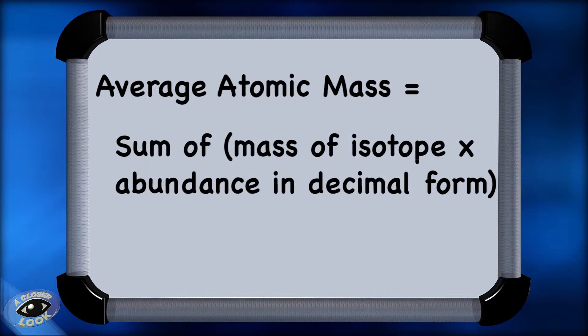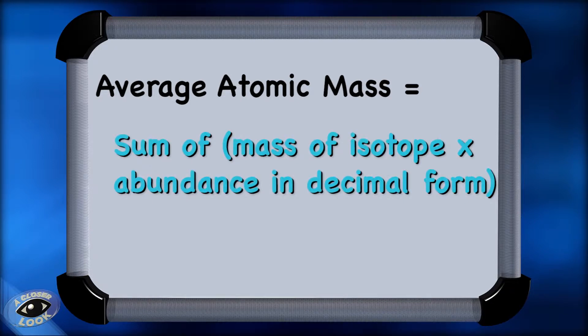To find the average atomic mass, we use these relative percentages of their abundances, multiplying them by the exact mass of the isotopes. Here's the equation that will help us with these calculations.